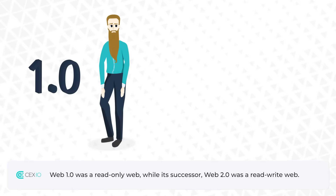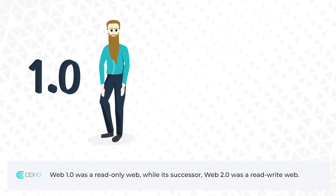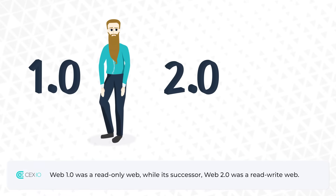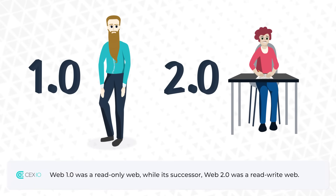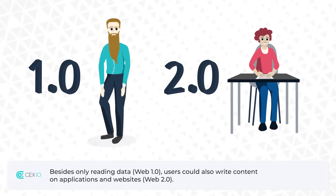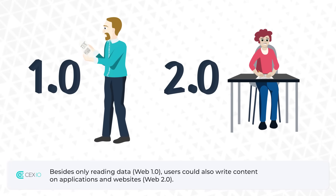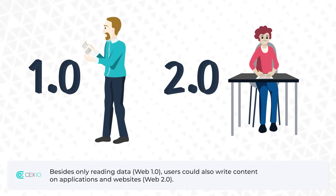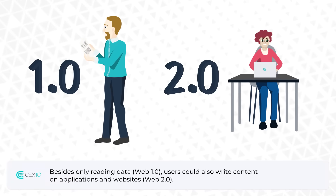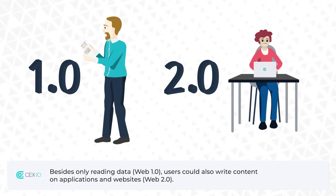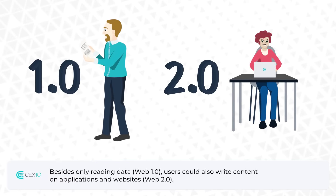Web 1.0 was a read-only web, while its successor, Web 2.0, was a read-write web. Besides only reading data in Web 1.0, users could also write content on applications and websites in Web 2.0.